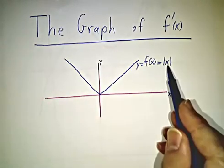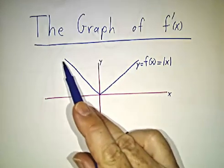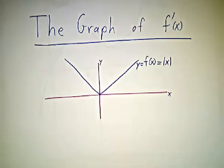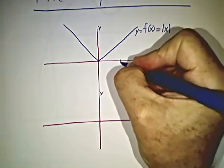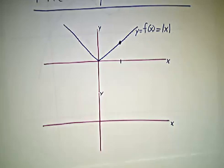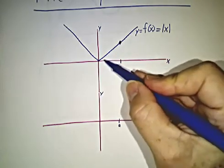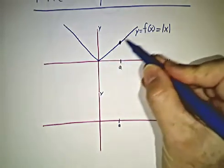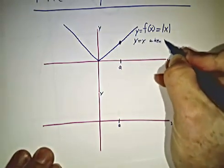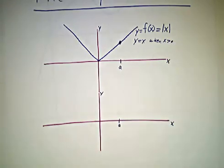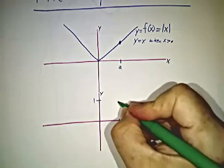Let's suppose that the original function was the absolute value of x. We want to figure out what f' is at all possible values of x. So let's first look at when x is positive. If x is some positive number, what's the slope of the tangent line at this point — let's call this point A? Well, this part of the graph is a straight line: it's the line y equals x when x is positive. And what's the slope of that line? Well, it's 1.